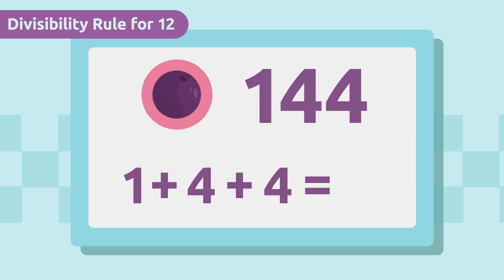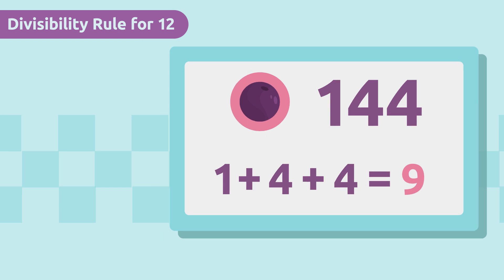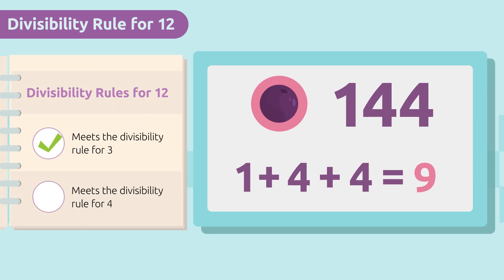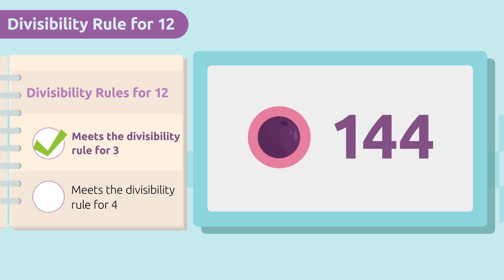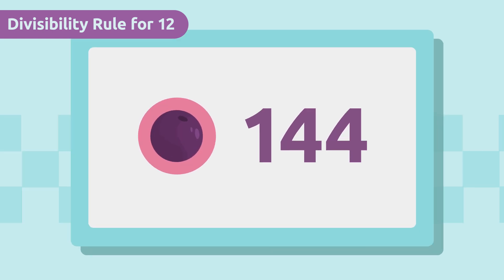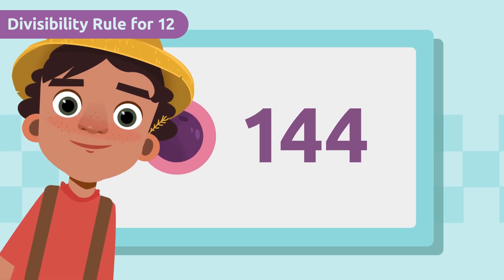The result is nine again. We know that nine is divisible by three, so 144 is divisible by three. Look how quickly we figured it out! Now let's try the divisibility rule of four, as my brother Trevor explained.